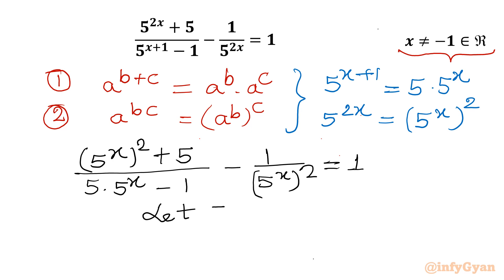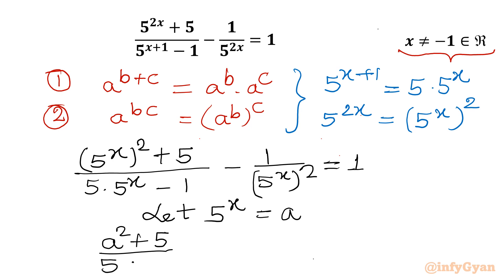Now let us use our substitution. Let 5 power x equal to a. So our equation will transform into: a square plus 5 over 5a minus 1, minus 1 over a square, equal to 1.